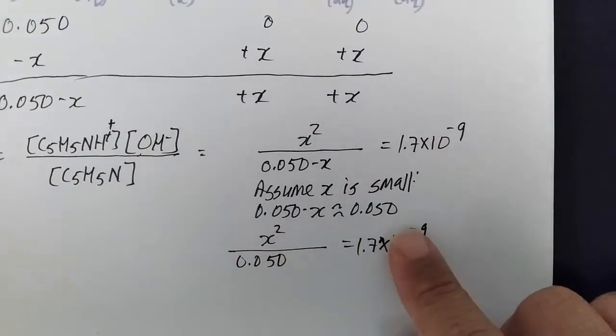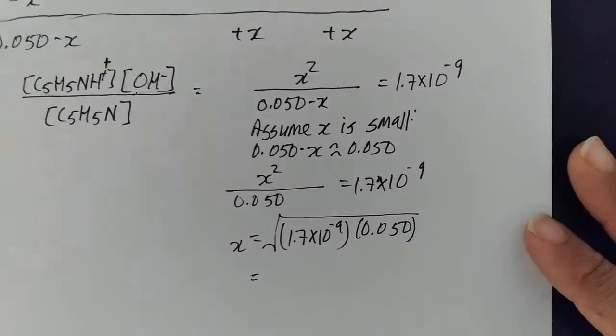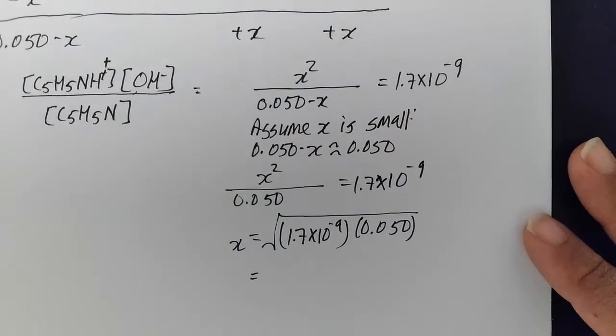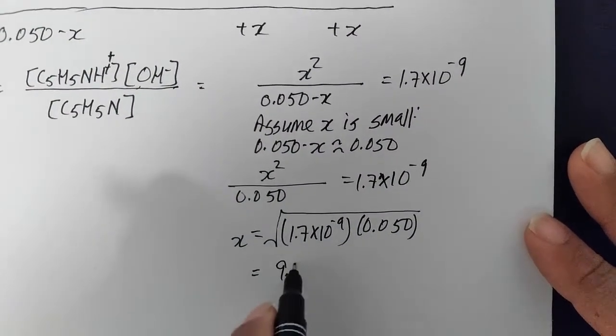So 0.050 will multiply that, take the square root to isolate X. So doing this on my calculator, I'm getting an answer of about 9.22 times 10 to the minus 6.